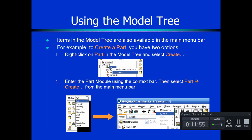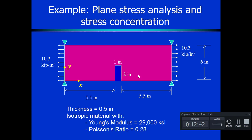The items in the model tree are also available in the main menu bar, so there are different ways to accomplish tasks. For example, to create a part you can right-click on 'Parts' in the model tree and select 'Create', or you can go to the context bar, move to the Part module, and use the menu to create a part. The more you use it the more comfortable you'll get with it.